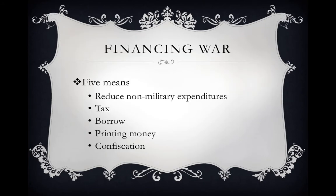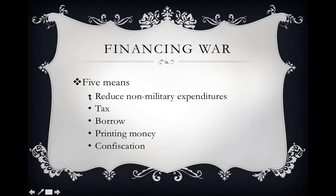Moving into the Revolutionary War phase, there are five things you can do to finance a war. First, you can decrease spending: if you increase military expenditures, you can decrease non-military expenditures — just like balancing a household budget. Second, you can raise revenues by taxing. However, this was probably not viable for the colonies, given the 'no taxation without representation' chant — the colonists didn't want to pay taxes because they had no voice in Parliament.